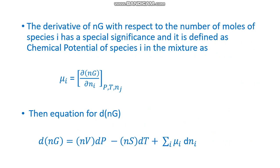By substituting this term in the above equation, we get the final equation: d(nG) = (nV)dP - (nS)dT + Σi μi dni. Here ∂(nG)/∂ni is replaced with the simple term chemical potential μi.